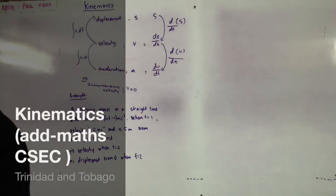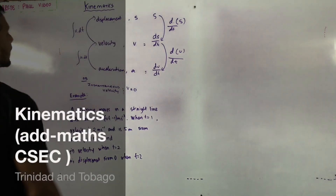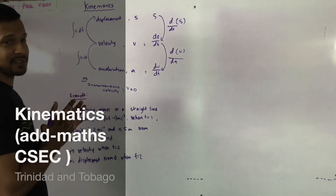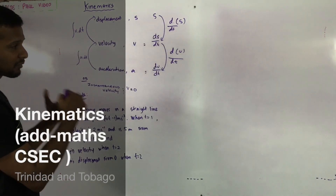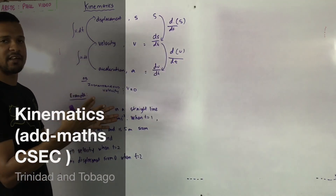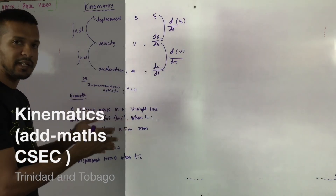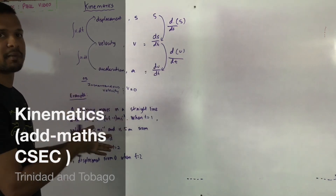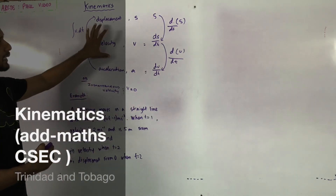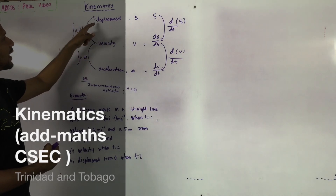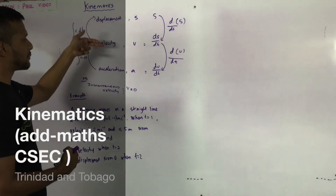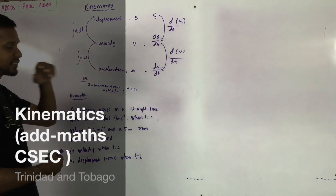Welcome. Today we take a look at kinematics. This is a continuation from what we looked at before with scalar and vector quantities, speed, displacement, velocity, and so on. Here we look at the additional mathematics side of it, where we have to look at how we go from displacement to velocity to acceleration.